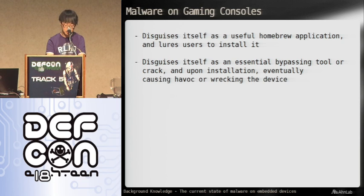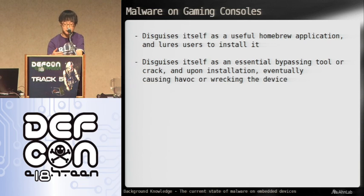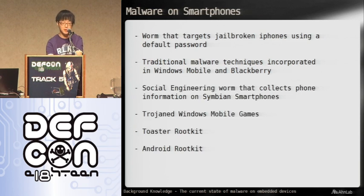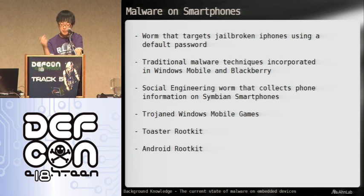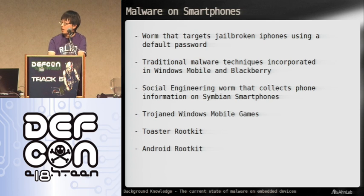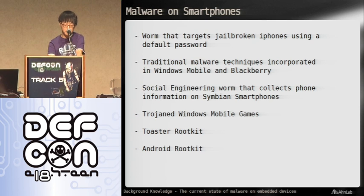The second case is a cracking tool that advertises itself as breaking the security of a device — somewhat like jailbreaking — and makes users run it on their system, but then it just wrecks the machine. These are the two kinds of malware on gaming systems that were publicly discovered so far. On the other hand, there were quite a few malware on smartphones — a couple are presented here, though I'm sure there are more that anti-virus companies obtained secretly but didn't release to the public. These are the more popular ones made public on the web.